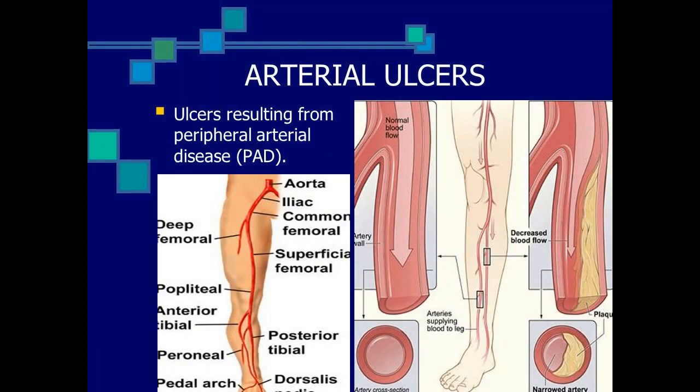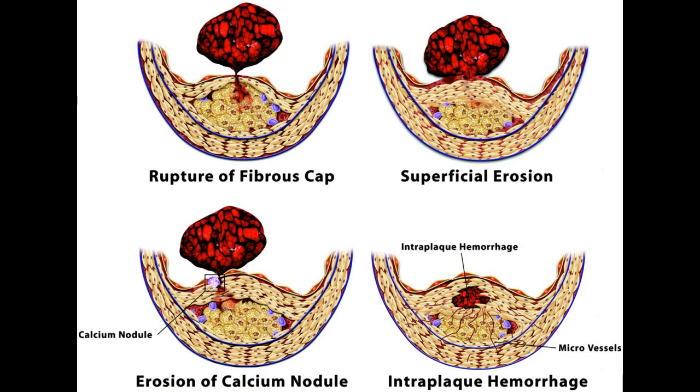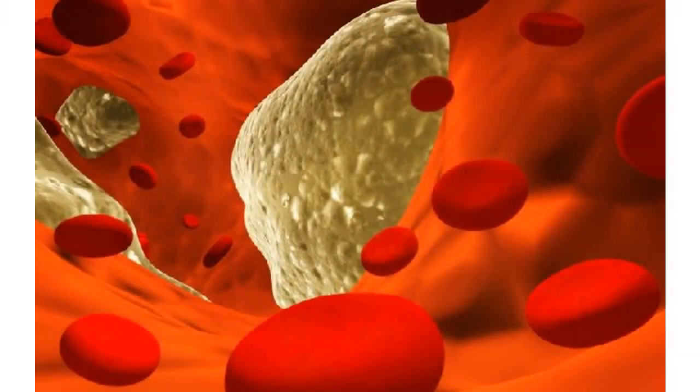There are also other surface defects on the endothelium, like ulceration, ruptures, and erosions, which lead to platelet flux and result in thrombogenesis — or clot formation. Sometimes the lipid core material from the lesion comes out, flows into the blood, and blocks other smaller vessels as well.